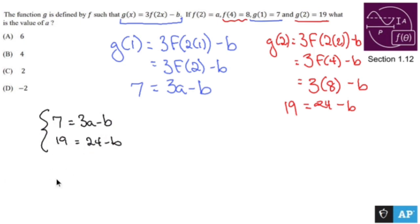So if I take this bottom equation and subtract 24 from it, I get negative 5 equals negative b. If negative 5 is negative b, then positive 5 is positive b, so b becomes 5.